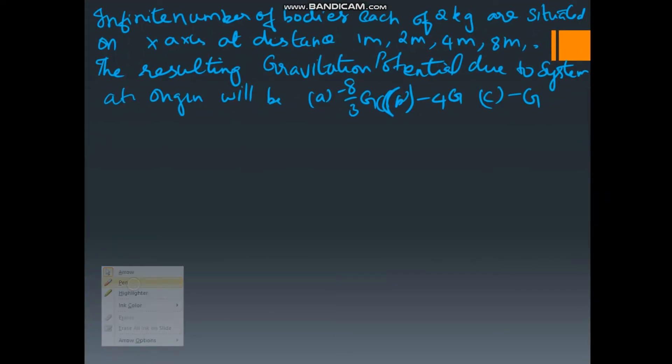Now, let us see this numerical. This is a previous year question. Infinite number of bodies each of 2 kg are situated on X axis at distance 1 meter, 2 meter, 4 meter, and 8 meter, and it goes on. The resulting gravitational potential they are asking.